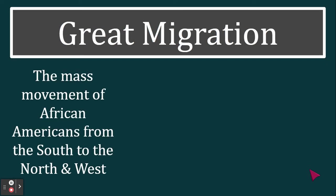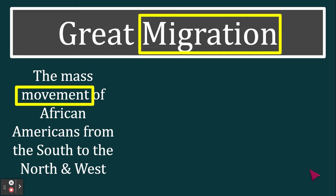The Great Migration is the mass movement of African Americans from the south to the north and west. This happened between about 1910 and 1970 — right before World War I all the way up until 1970. Migration and movement mean the same thing, and 'great' here means big, so Great Migration is another way of saying the big movement of African Americans.